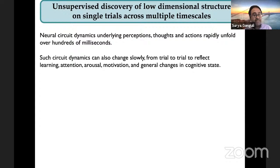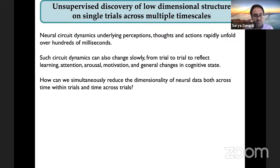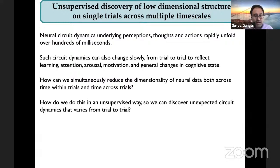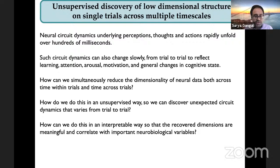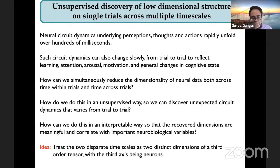Neural circuit dynamics underlying perceptions, thoughts, and actions unfold relatively rapidly on a timescale of hundreds of milliseconds. But on much slower timescales, such circuit dynamics can change to reflect trial-to-trial changes in learning, attention, arousal, motivation, and other general changes in cognitive state. The question is: how can we simultaneously reduce the dimensionality of data both across time within trials and across trials — these two very disparate timescales? Moreover, how can we do this in an unsupervised way so that we can discover unexpected circuit dynamics that varies from trial to trial? And how can we do this in an interpretable way so that the recovered dimensions correlate with important neurobiological variables?